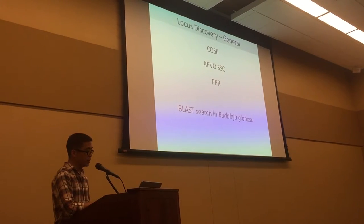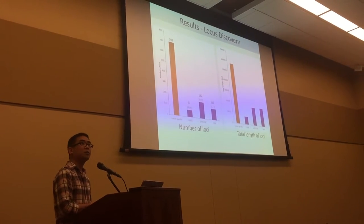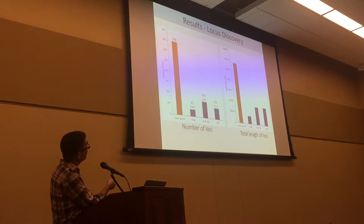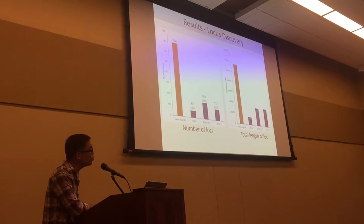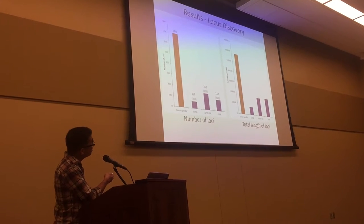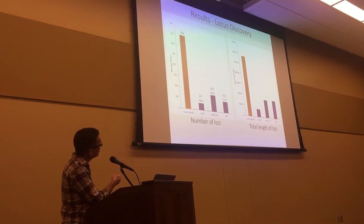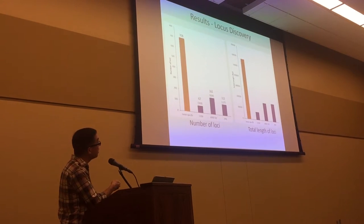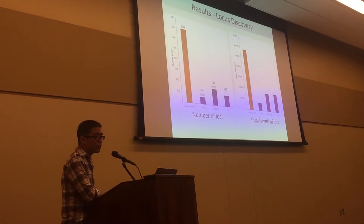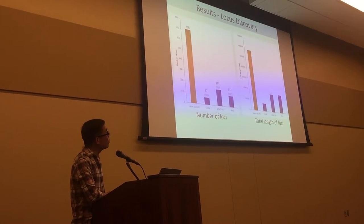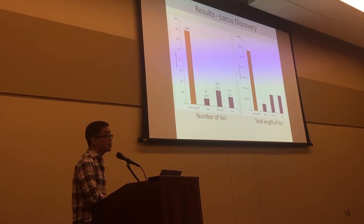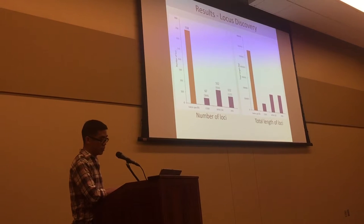For results, I'll show the taxon-specific set in orange and the general sets in blue for COSII, APVO, and PPR. Showing the total number of loci identified and the total length of all those loci — for the general sets I'm also showing the number identified in Buddleja on top and the number in the original publication on the bottom. The number in Buddleja was always a fraction of that total. We had much higher numbers for the taxon-specific set, which makes sense because closely related species share more loci.